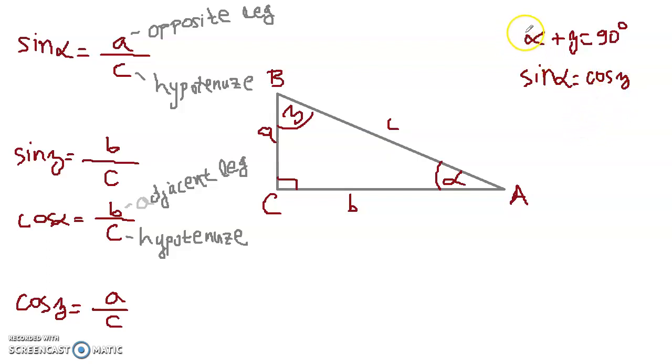And using previous equation, so this equation, I can write beta as 90 minus alpha. So this will be cosine of 90 minus alpha.